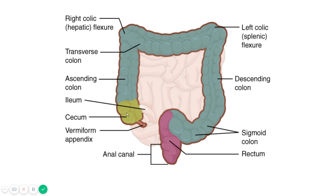The cecum is located between the ileum and the colon. This part is the ascending colon, this is the transverse colon, and this is the descending colon.